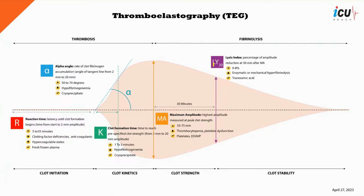The LY30 parameter, or lysis at 30 minutes, of thromboelastography measures the percentage of clot breakdown that occurs 30 minutes after reaching the maximum amplitude. This phase provides insight into the ability of the clot to resist breakdown and the activity of fibrinolysis. The normal range for LY30 is 0 to 8%. If the LY30 is increased, it may suggest an increased fibrinolysis. In such cases, the patient may benefit from treatment with tranexamic acid.